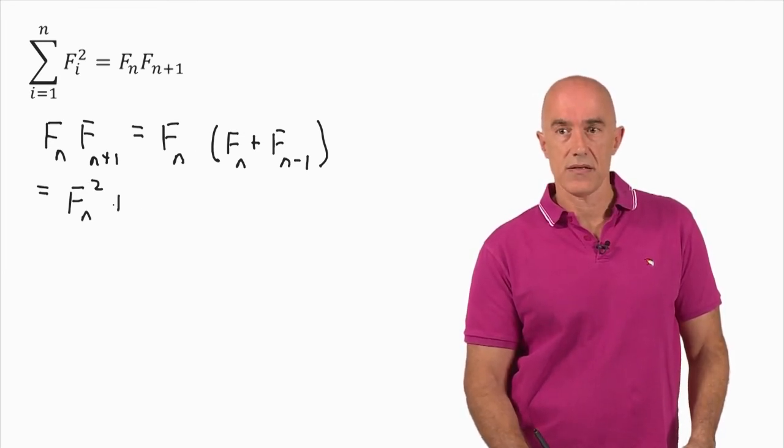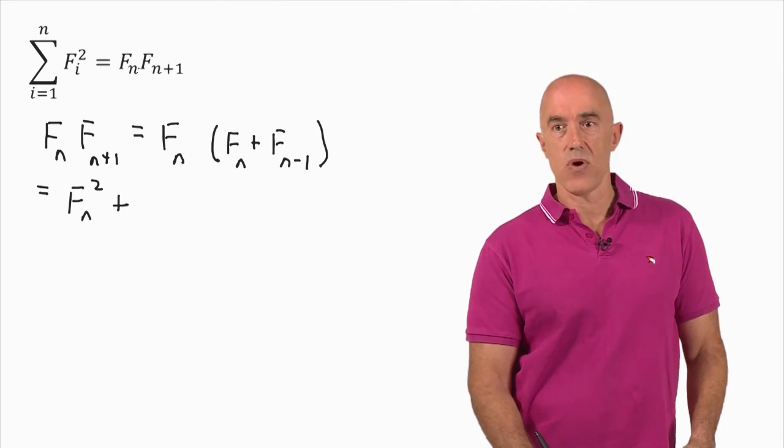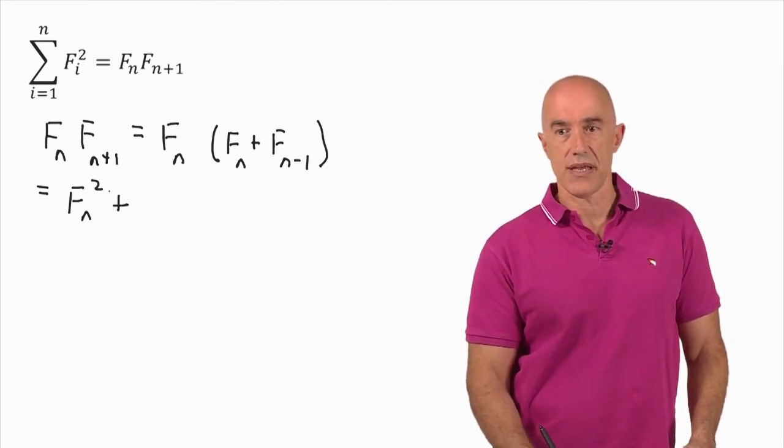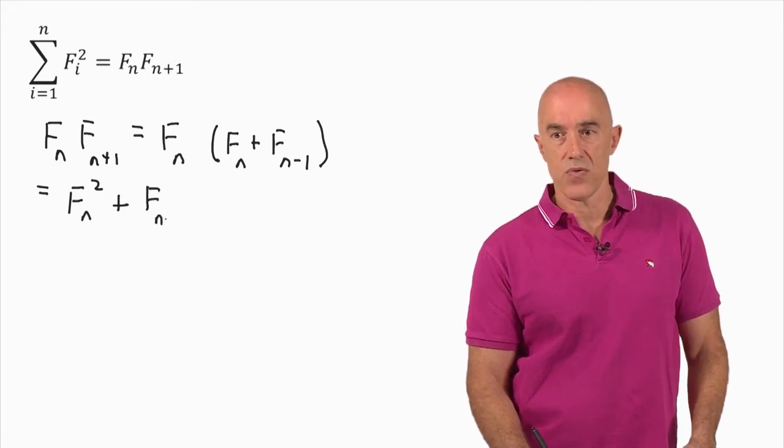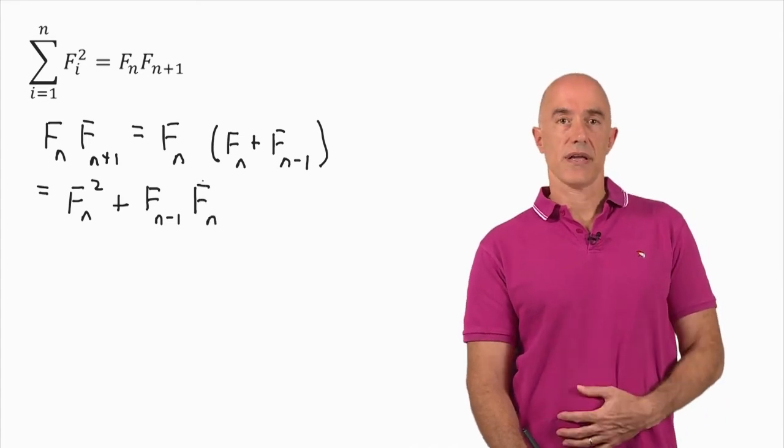And what remains, if we write it in the same way as the smaller index times the larger index, we change the order here, we have F sub n minus 1 times F sub n.